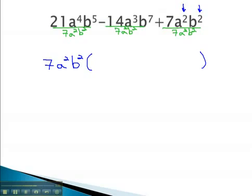As we do and reduce those fractions, 21 over 7 gives us 3 a squared b cubed, minus 14 over 7 gives us 2. Subtracting exponents leaves us with a, b to the 5th. Plus, 7 over 7 is 1, and the a's and b's divide out completely.